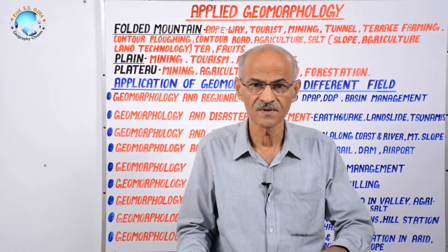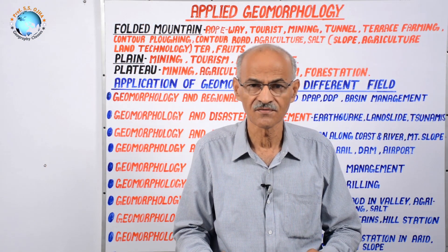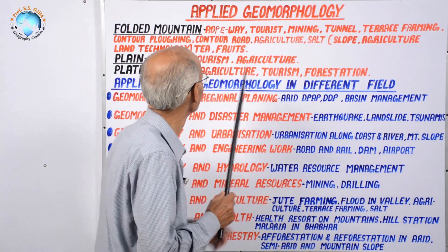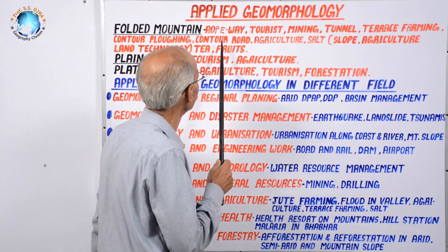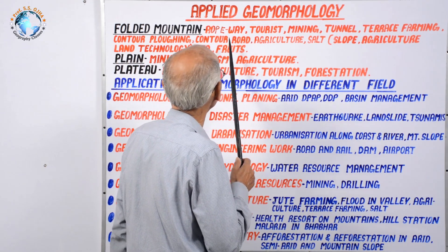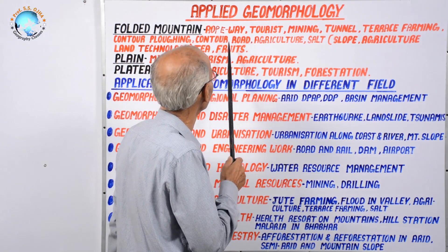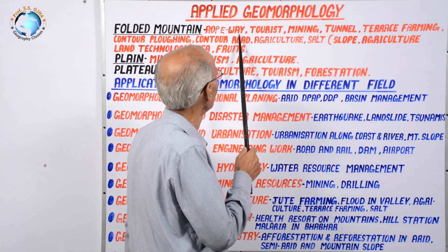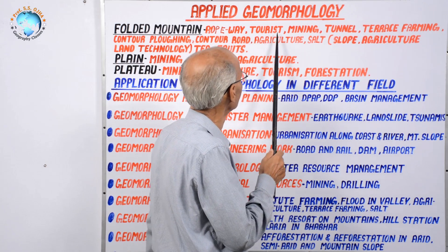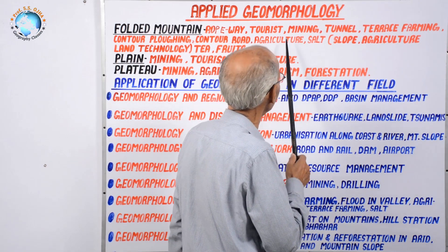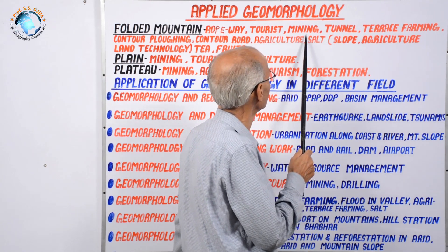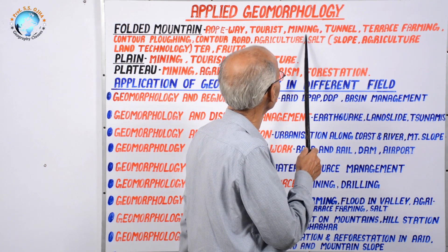The second aspect of applied geomorphology is the interaction of man with different topographies — mountain, plateau, and plain — and the application of landforms and processes there. On folded mountains with high snow-clad peaks, human society has deep interaction. For example, ropeways are constructed from valley bottoms to mountain peaks for tourism, and there are health resorts on mountain tops like Mussoorie and Shimla.